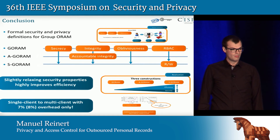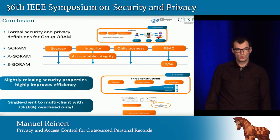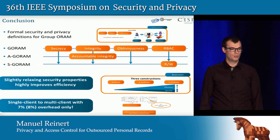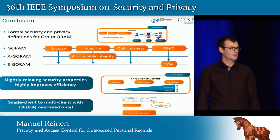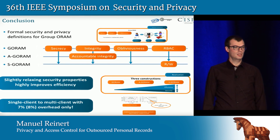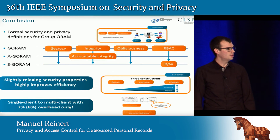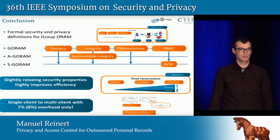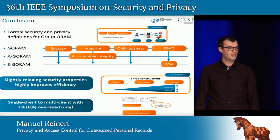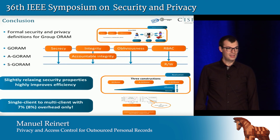Let me conclude. I've shown you a formal framework for group ORAM where we define several security and privacy properties in a unified attacker model. I've also shown three different constructions — GoRAM, Accountable GoRAM, and Scalable GoRAM — going from top to bottom, increasing in efficiency, with the first-to-second transition slightly decreasing security, and the second-to-third slightly decreasing flexibility. If you remember only two things: first, slightly relaxing security properties can highly improve efficiency; second, porting single-client ORAM to multi-client ORAM costs only 7% to 8%.